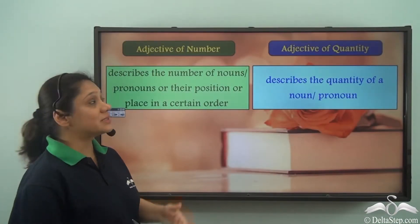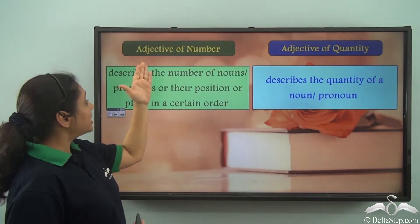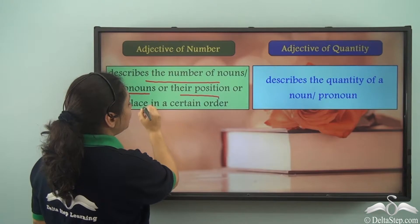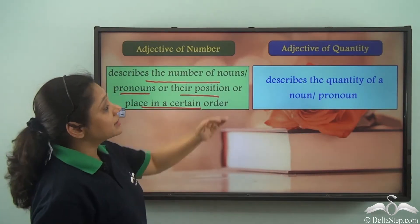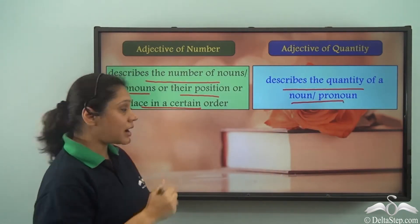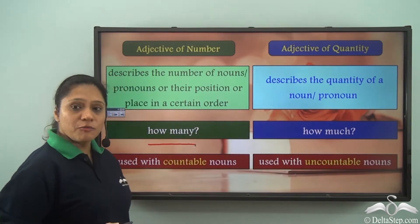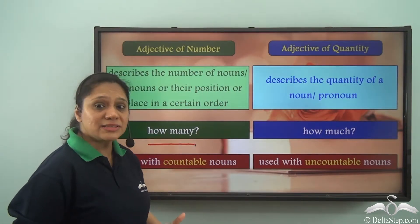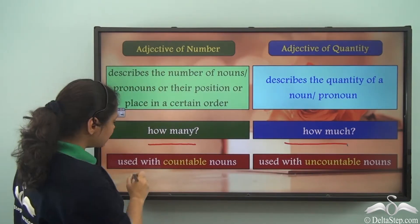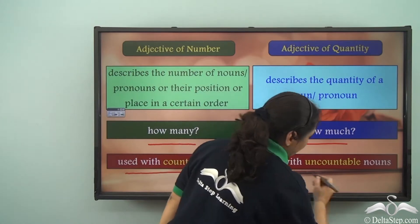So what is the difference between an adjective of number and an adjective of quantity? An adjective of number describes the number of nouns or pronouns or their positions in a certain order, whereas an adjective of quantity describes the quantity of a noun or a pronoun. An adjective of number answers the question 'how many,' whereas an adjective of quantity always answers the question 'how much.' An adjective of number is always used with countable nouns, whereas an adjective of quantity is used with uncountable nouns.